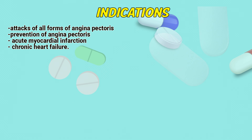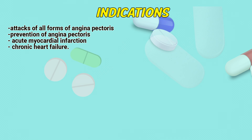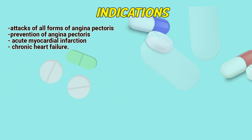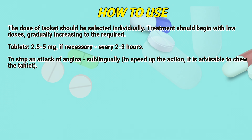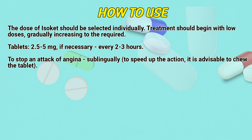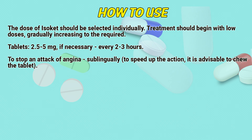Isoket is a hypertensive antianginal drug. It reduces myocardial oxygen demand by reducing preload. It has a coronary dilating effect. It increases exercise tolerance in patients with coronary artery disease, and expands the vessels of the brain, which may be accompanied by a headache.